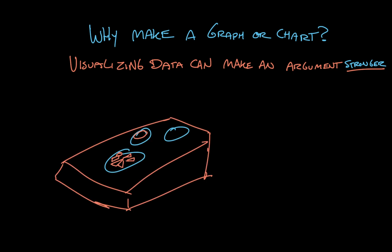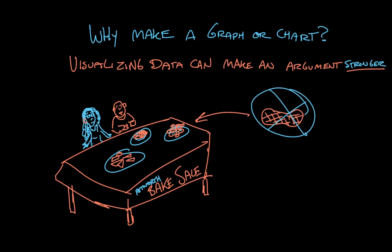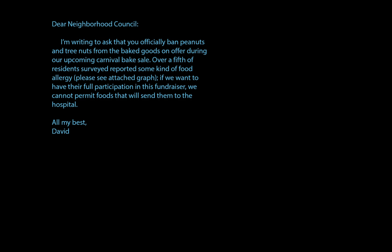Let's say my neighborhood is having a bake sale to raise money for a carnival, and some of my neighbors have peanut allergies. So I want to write to the neighborhood council to say, let's make sure that the baked goods don't have peanuts in them, so the whole neighborhood can participate without fear of having an allergic attack. Good readers know that data is important to informational texts, so as a writer, I want to make sure I'm backing up my claims with a chart. Here's the text of the letter I'd send: 'Dear neighborhood council, I'm writing to ask that you officially ban peanuts and tree nuts from the baked goods on offer during our upcoming carnival bake sale. Over a fifth of residents surveyed reported some kind of food allergy. Please see attached graph.'